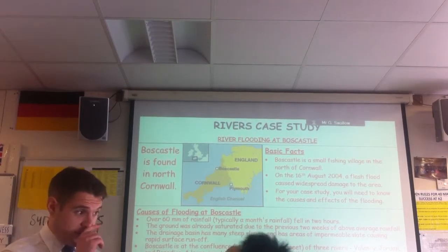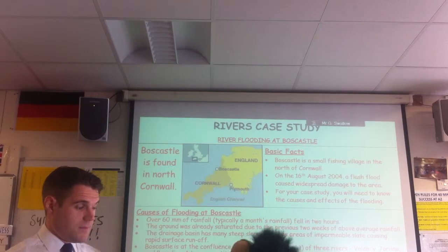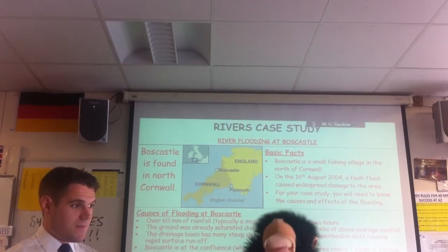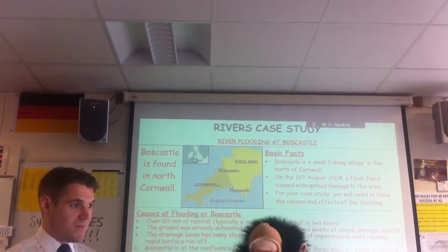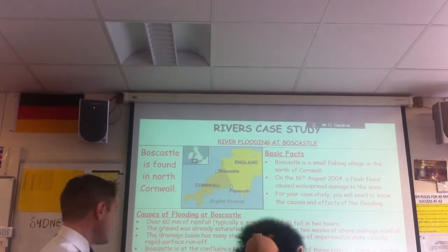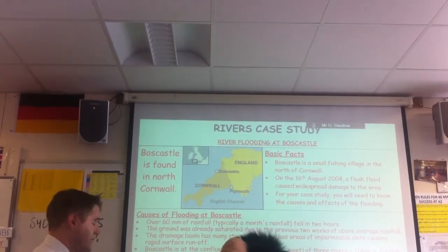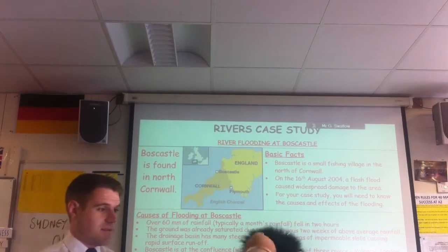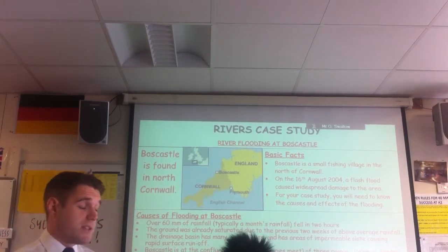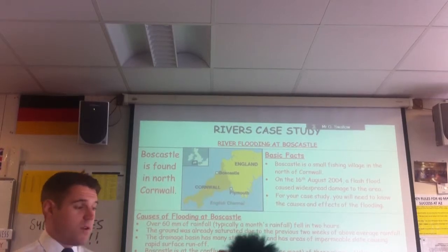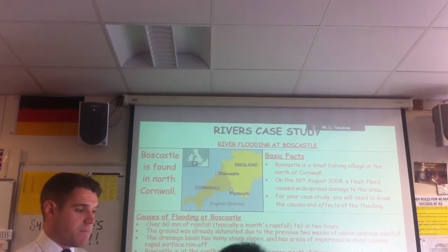Bangladesh is very low-lying. Boscastle has quite steep slopes going into it, therefore causing a flash flood. The two rivers near our school have flooded terrificly over the last couple of months. Is that because the ground is so saturated? That's partly one of the reasons - you can't take any more water in the ground, it's full, and any little bit of rain causes flooding.